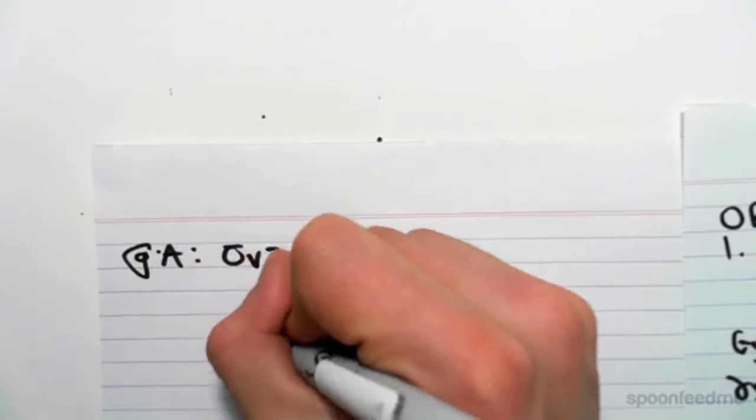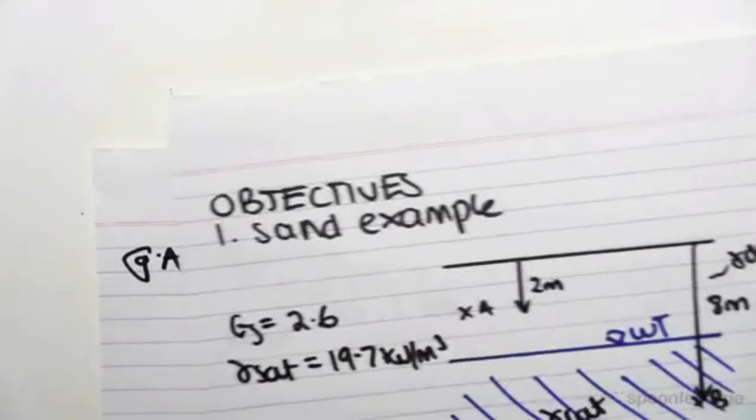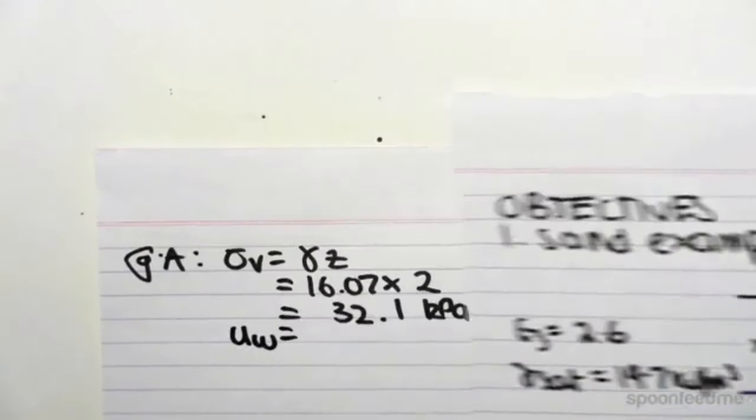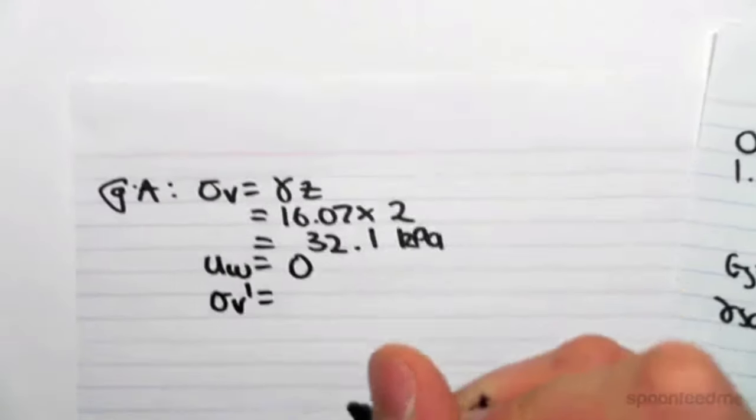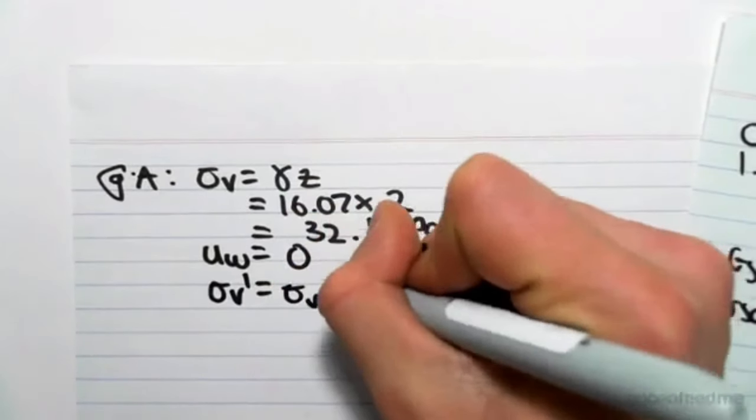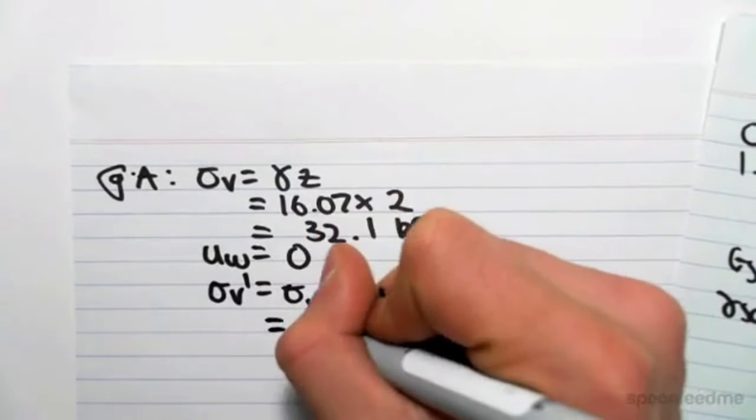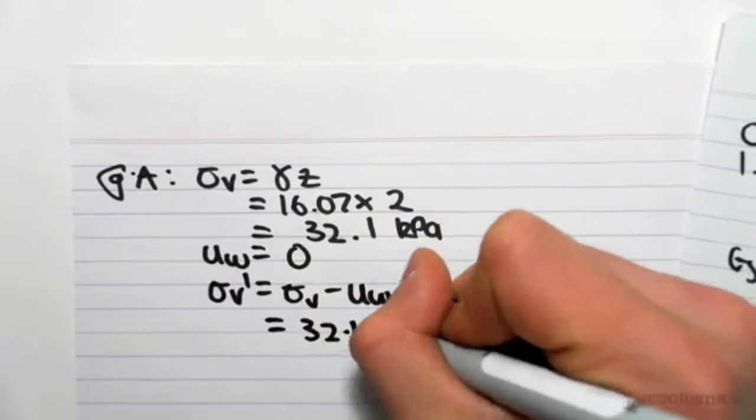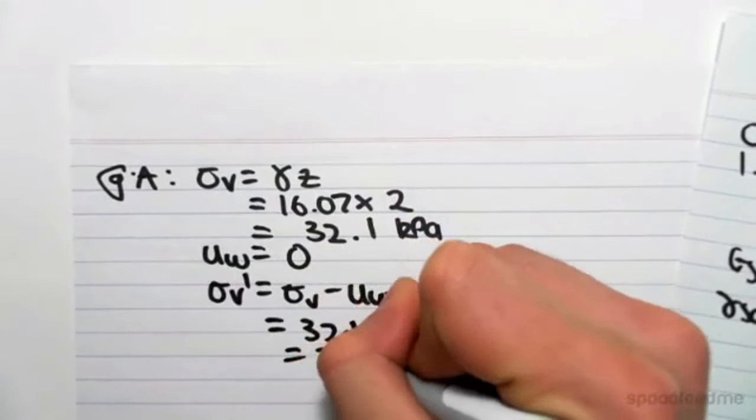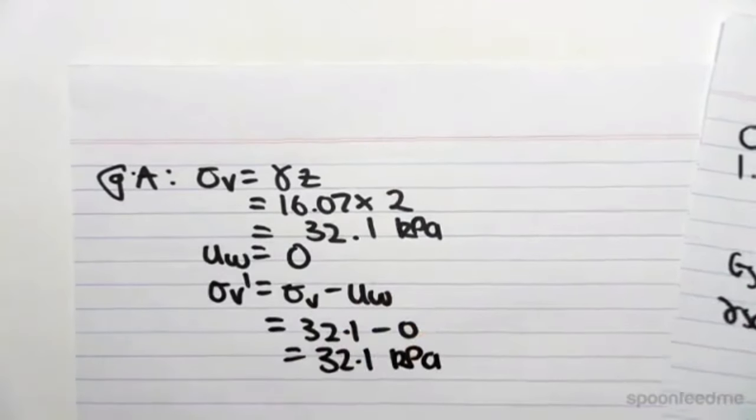We get 32.1 kPa. The pore water pressure at A is zero. There's no water at A. So this is zero, which means that the effective stress is the total stress minus the pore water pressure, which will be 32.1 minus zero, which will be 32.1 kPa.